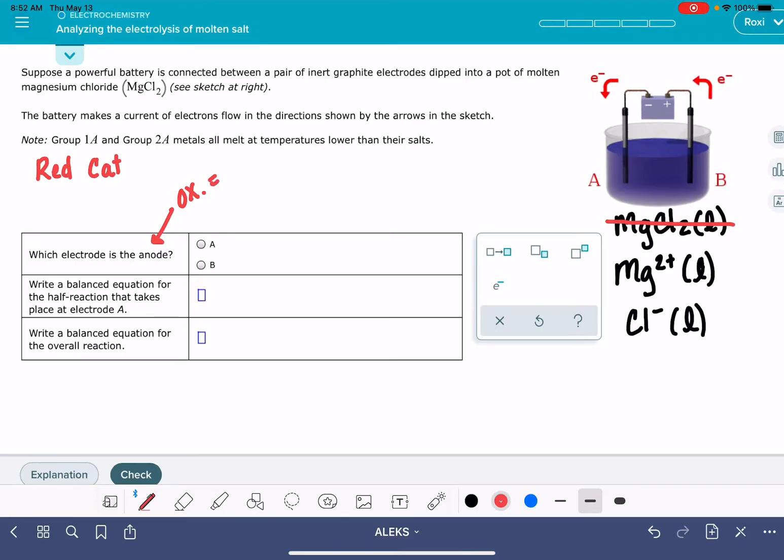In oxidation, our trick Oil Rig helps us remember that oxidation is where electrons are being lost. So if we look at our two electrodes, we can see the electrons are leaving B and going to A. So electrons are being lost at the anode B.